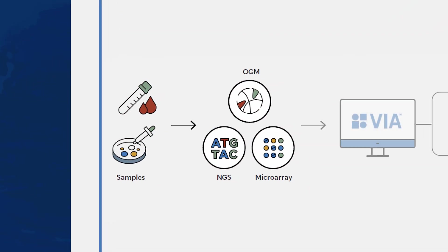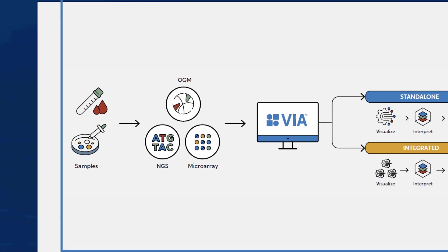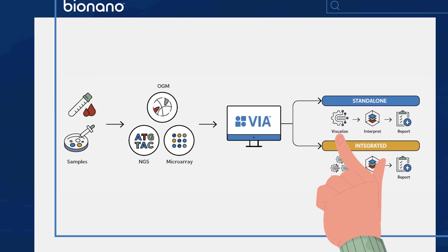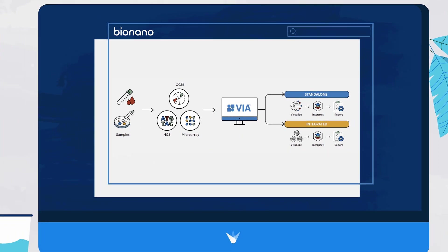With VIA, not only can you analyze each data type in an independent workflow, but more importantly, you can combine data sets for an integrated analysis to maximize meaningful findings for a sample.